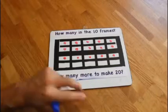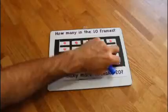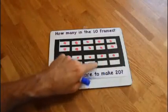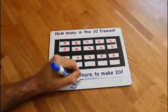How many more to make 20? 20 is 2 full 10s. So, we've got to finish filling it up. 1, 2, 3, 4, 5. We need 5 more to make 20. 5.